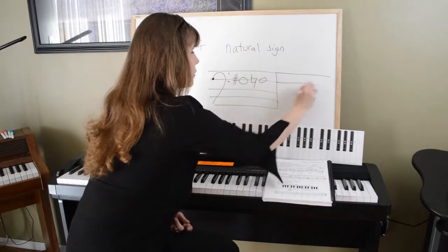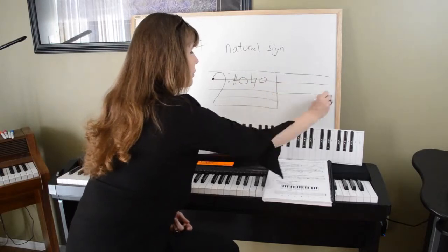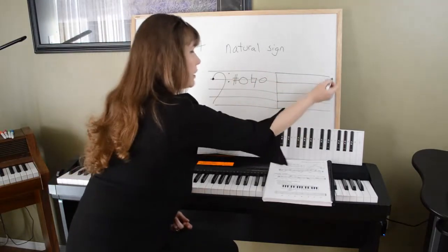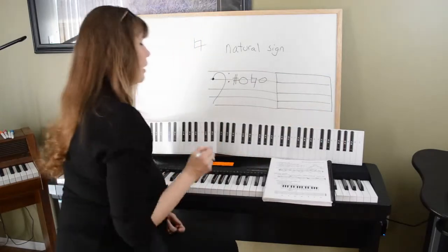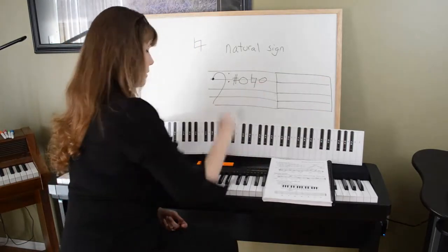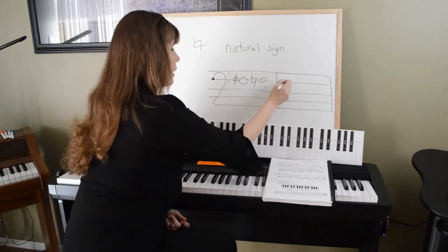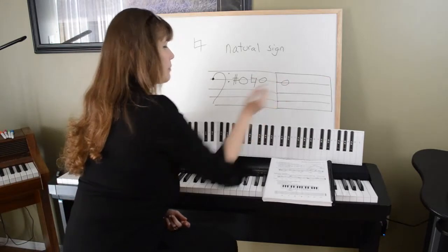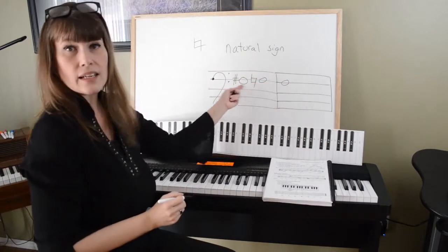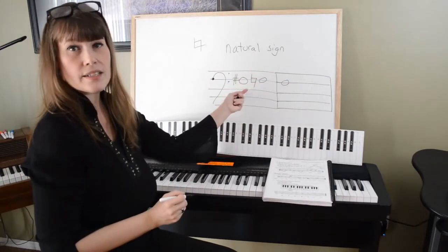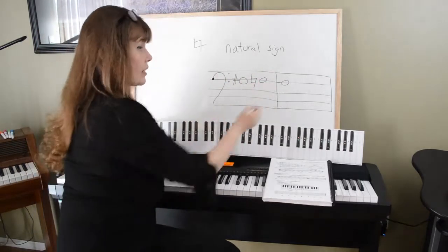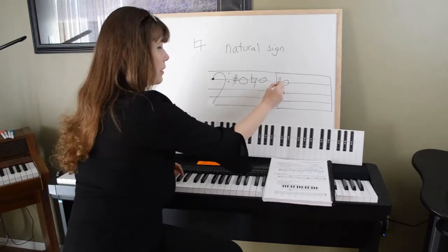Let's add to this and treat that as our bar line. If it was natural there and I went to the next measure, that bar line cancels any accidentals that happened in the previous bar. So if I wanted another F sharp, I would have to sharp it again.